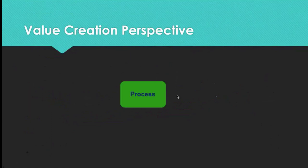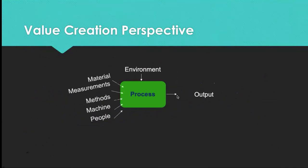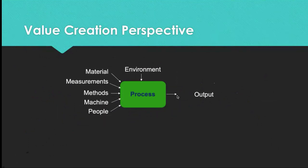Looking at operations management from a value creation perspective, we go through an operational process and arrive at output. Many inputs go in — material, measurement methods, machines, and people. All kinds of things go into operations and come out as outputs of service or product. In a healthcare operation, for example, the output should be health — a healthy life. That should be the output.